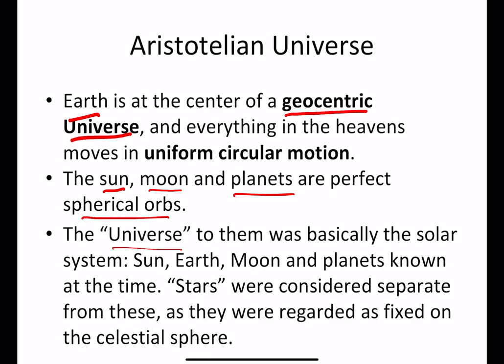To them, the entire universe was basically the solar system — the earth, moon, and known planets. The stars were considered separate, imagined to be fixed on the celestial sphere surrounding the earth. They imagined the constellations painted on this celestial sphere, which rotated around the earth, while the sun, moon, and planets orbited the earth. That was the Aristotelian, or geocentric, universe — geocentric meaning earth at the center.